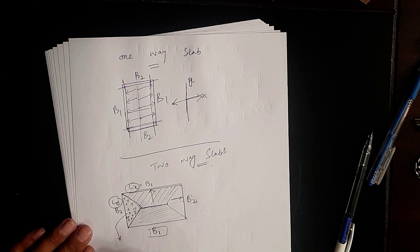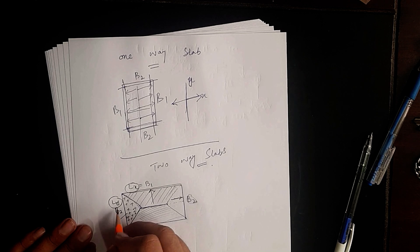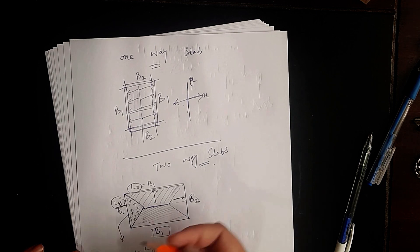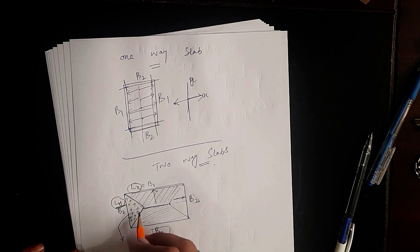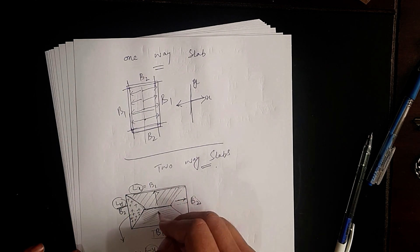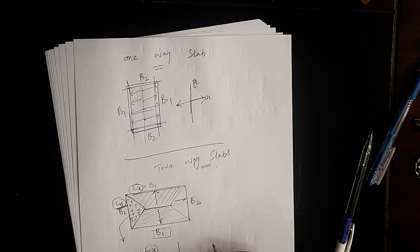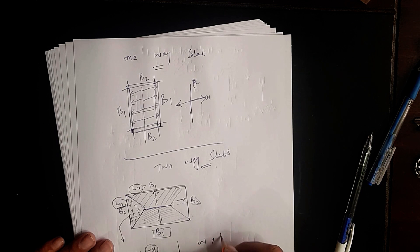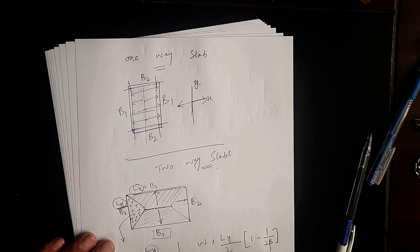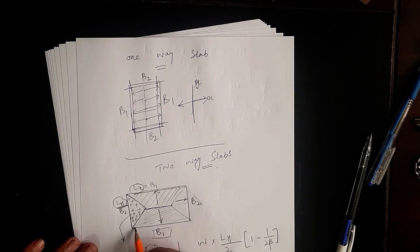The quantity of the triangular load on beam B2 can be calculated as: Load on B2 = W × LY / 3, where W is the applied load and LY is the shorter span. So whatever the load is, multiply it by this length divided by 3. For the longer direction, the load on beams B1 is calculated as: Load on B1 = W × LY/2 × (1 − 1/(2β)).